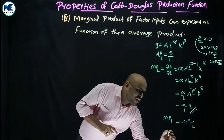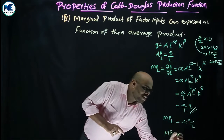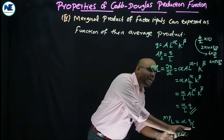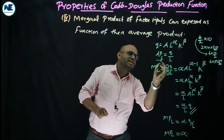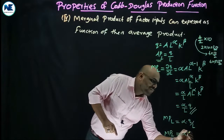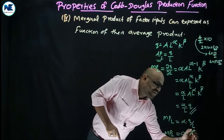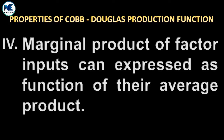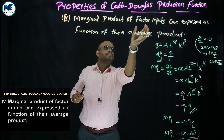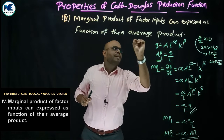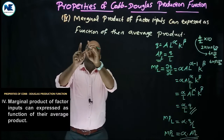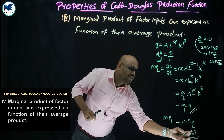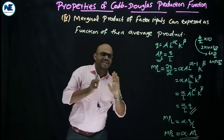So the marginal product of labor equals alpha times Q/L. Since Q/L is the average product of labor, marginal product of labor equals alpha times the average product of labor. This proves that the marginal product of labor can be expressed as a function of its average product.